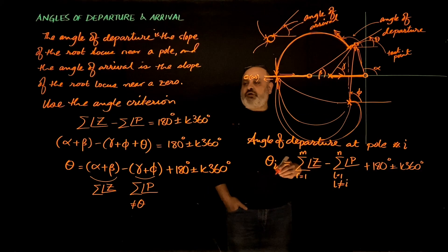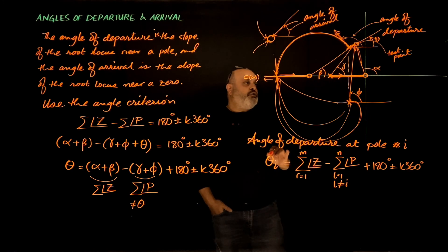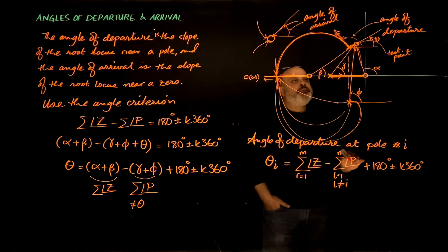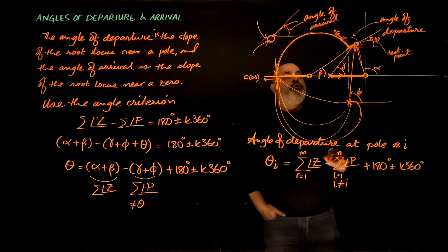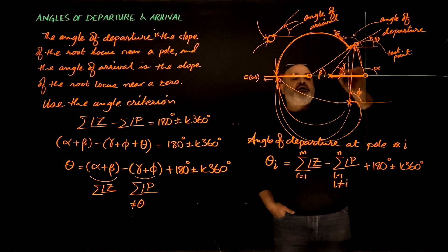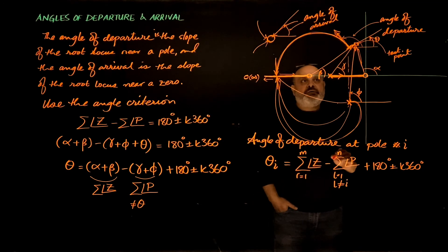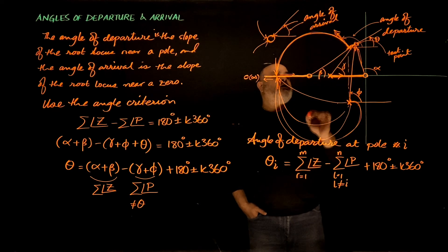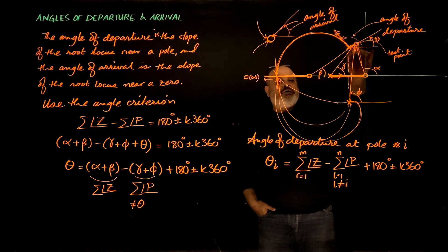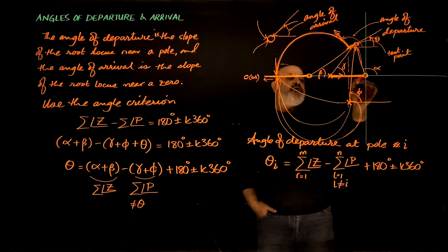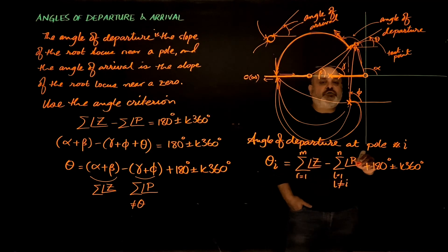To apply this, I place the test point as close as possible to the pole so that the line between the pole and the test point represents the slope at the pole. The angles from all the zeros and other poles to the test point are essentially the same as the angles from those zeros and poles to the pole itself, since the test point is so close to it.